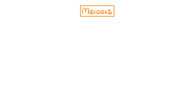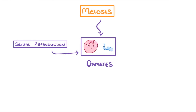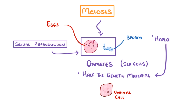In this video we're going to take a look at how the process of meiosis works and how it forms gametes. You might remember from our previous video that sexual reproduction requires gametes, which we sometimes call sex cells and include things like sperm cells and egg cells. The important thing about these gametes is that they only contain half the genetic material of a normal cell, so we can call them haploid cells.